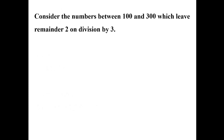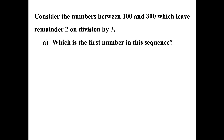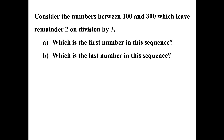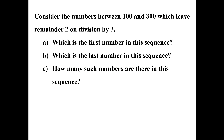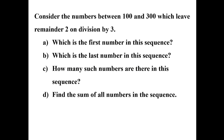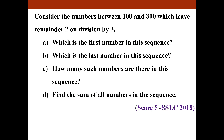Consider the numbers between 100 and 300 which leave a remainder 2 on division by 3. Which is the first number in the sequence? Which is the last number? How many such numbers are there? Find the sum of all such numbers. This is a question from SSLC 2018 with a score of 5. We consider numbers between 100 and 300.